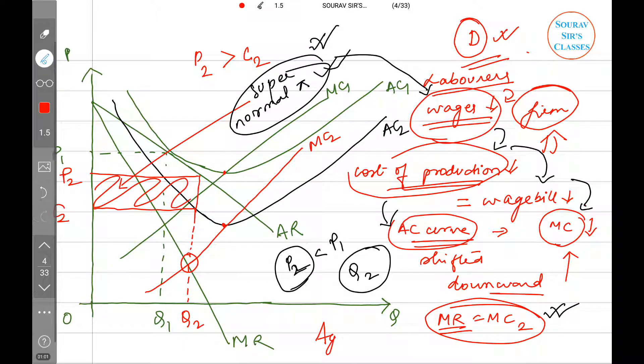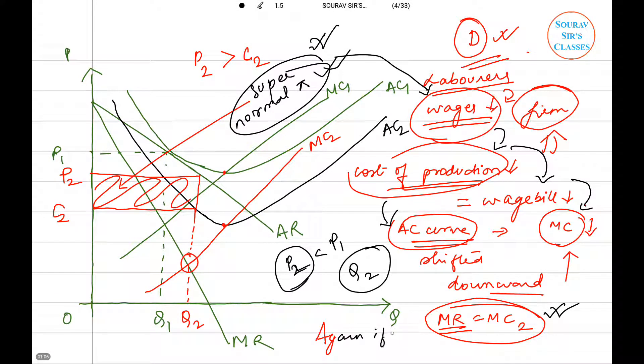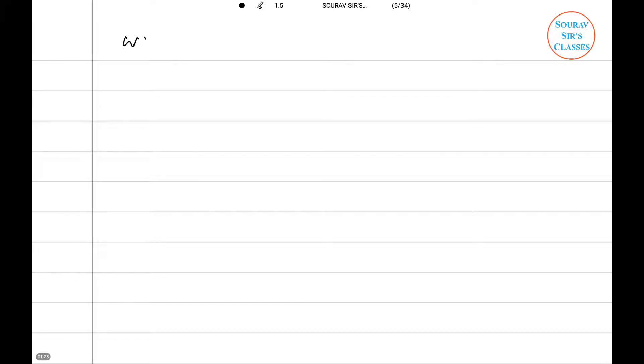The answer is very simple. We had this diagram before. So again, if wages fall, the same procedure will follow. If wages fall, that means cost of production falls.